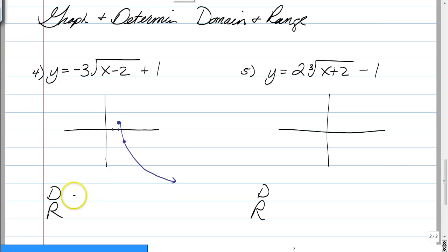Now for our domain and range, you must look at these graphically. So our domain, domain is x. What values do we have for x? We only have x values of 2 and greater. So x has to be greater than or equal to 2.